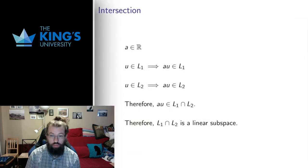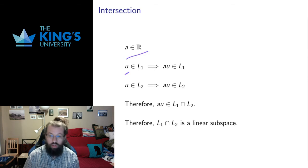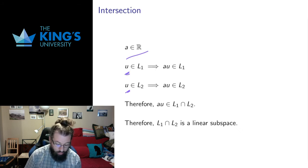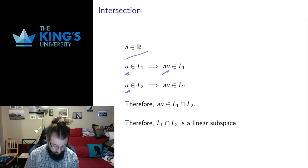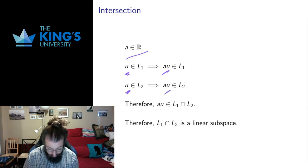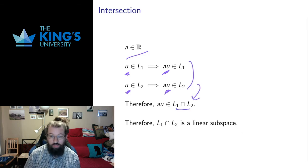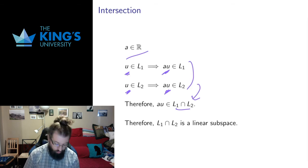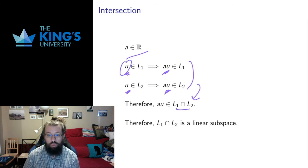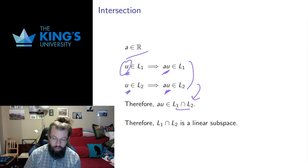I also need to do scalar multiplication. Take a scalar A and a vector U that's in the intersection, so it's in both L1 and L2. Since it's in L1 and L1 is linear, any multiple of it is in L1. Since it's in L2 and L2 is linear, any multiple of it is in L2. That means AU is in both L1 and L2, which means it's in the intersection by the definition of the intersection. So I've shown the intersection is closed under addition and closed under scalar multiplication, and I can conclude that L1 intersect L2 is a linear subspace.